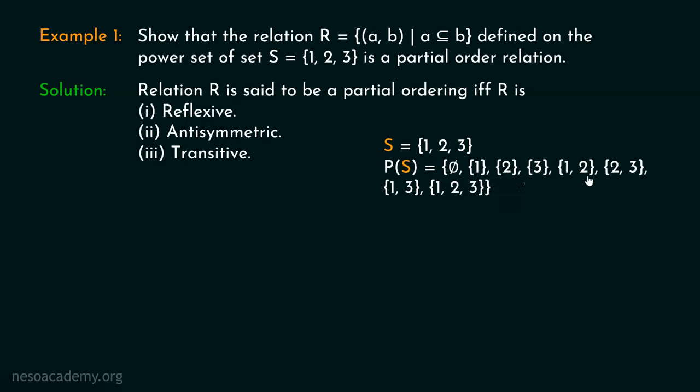But what do we mean by partial in partial ordering? The word 'partial' in partial ordering indicates that not every pair of elements in a set is comparable. That is why the word partial comes in partial ordering.